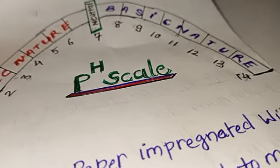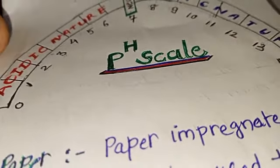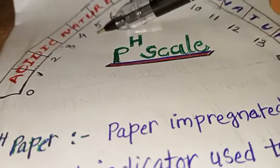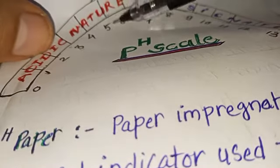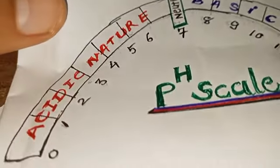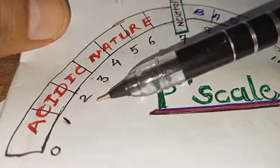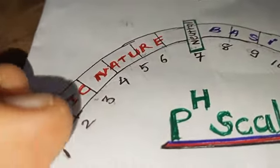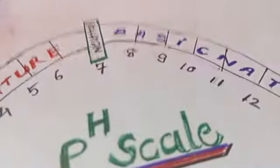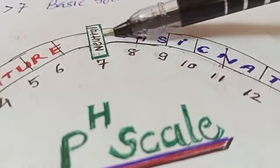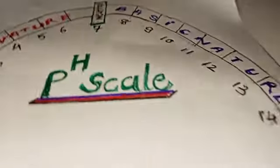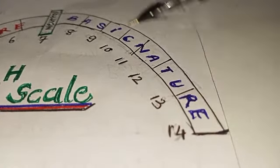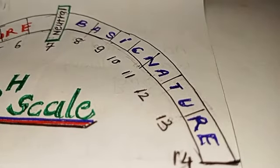This is your pH scale, dear students. We start the pH scale from zero. When the pH is zero, one, two, three, four, five, or six, we have the acidic nature of the solution. If pH is exactly seven, we have the neutral solution. And if the pH moves from eight, nine, ten, eleven, twelve, thirteen, to fourteen, then the solution has the basic nature.